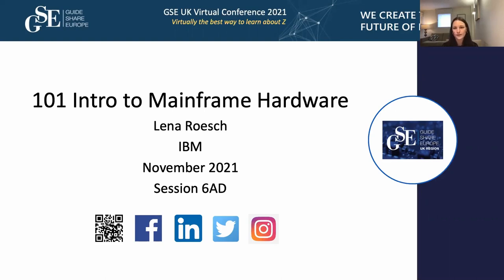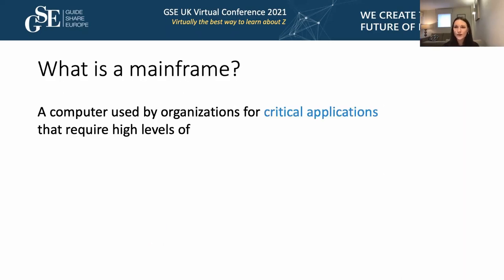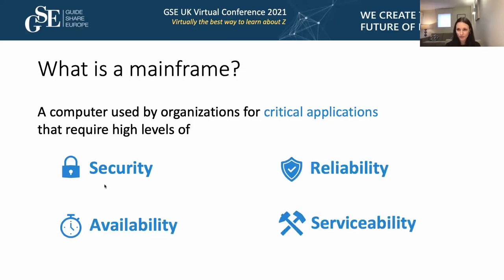I also want to talk about some cool use cases on how we can use the platform. So let's start with defining what a mainframe is. A mainframe is a computer used by organizations for critical applications that require high levels of security, reliability, availability, and serviceability. It's a computer like your laptop or your phone, but the architecture is specifically designed to be a great fit for critical applications that require high availability and security. We usually wouldn't call a mainframe just a computer — we refer to it more as a server, an enterprise server.